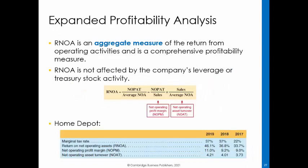A second method of ROE disaggregation distinguishes between operating and non-operating returns, as discussed in Module 3. Operating return, as measured by return on net operating assets (RNOA), is an aggregate measure of the return from Home Depot's main operating activities and is a comprehensive profitability measure not affected by the company's leverage or Treasury stock activity. ROA for Home Depot has steadily increased over the three-year period ending February 3, 2019. These returns are high, especially compared to other U.S. retail firms. This increase is due to both profitability and productivity, since both net operating profit margin and net operating asset turnover are increasing each year. These increases are steady and are positive signals about cost and asset management.